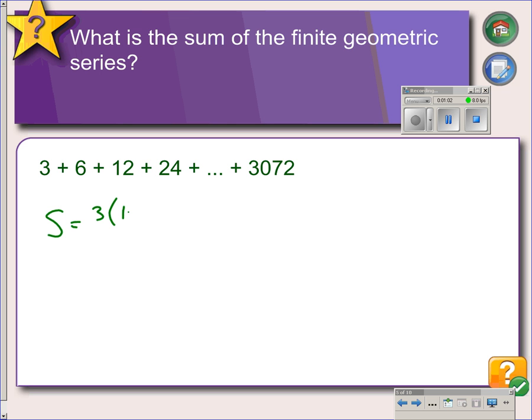times 1 minus r. r would be our common ratio. 6 divided by 3 is 2, 12 divided by 6 is 2, 24 divided by 12 is 2. So our common ratio is 2. And we need to know the number of terms, and we divide that by 1 minus r.